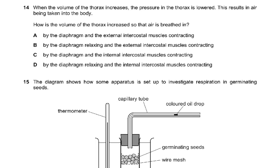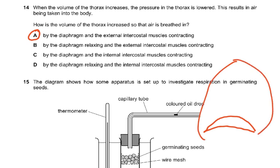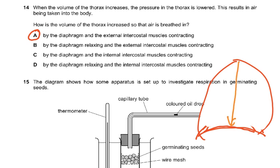Question 14: when the volume of the thorax increases, pressure is lowered and air is breathed in. How is the thorax volume increased? The diaphragm contracts — it is dome-shaped and becomes flatter, increasing volume from top to bottom. The external intercostal muscles also contract, raising the ribcage upwards and outwards, increasing volume side to side. The answer is A.